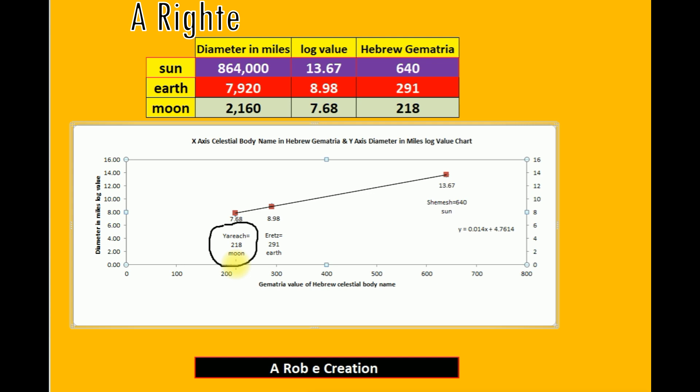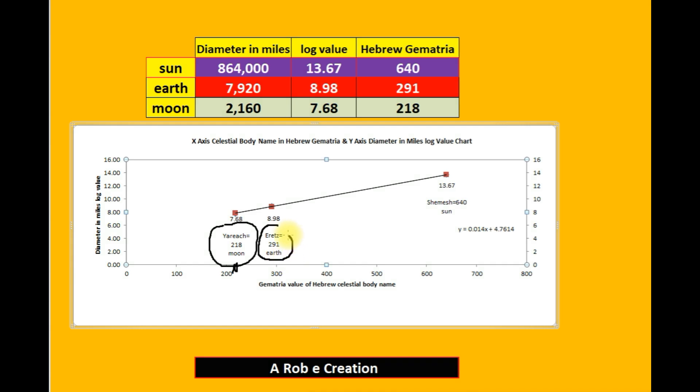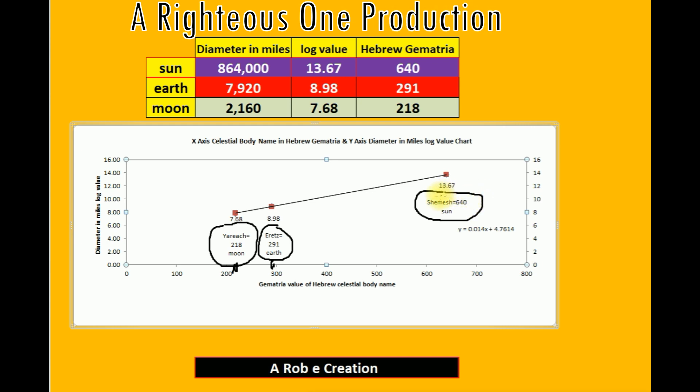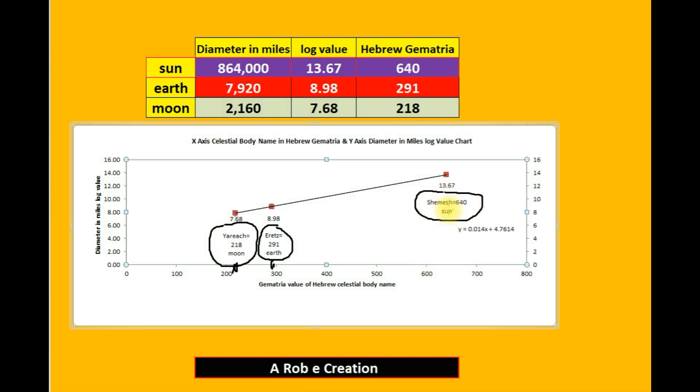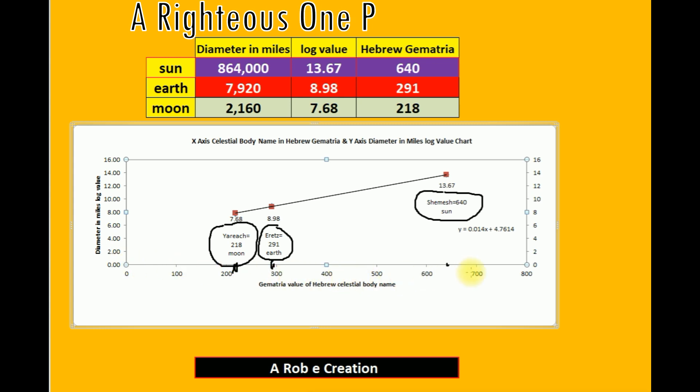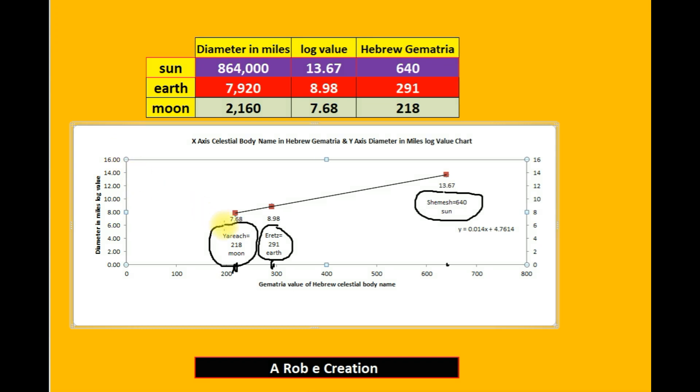X-axis right here. Earth, Eretz in Hebrew, has a Hebrew sum total of 291 right here. And the sun, Shemesh, has a Hebrew letter value of 640. So the Hebrew gematria letter value is represented on the X-axis here. And I use the e natural logarithm to create log values for the moon, earth, and sun.